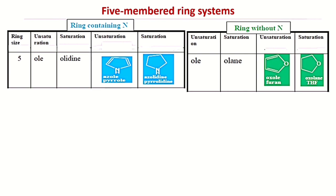If nitrogen is present as a hetero atom in the five-membered ring system, the suffix given to the heterocyclic ring name depends on saturation. If it is completely unsaturated — having all double bonds as in pyrrole — the suffix used is '-ole'. If it is completely saturated with no double bonds, the suffix becomes '-olidine'.